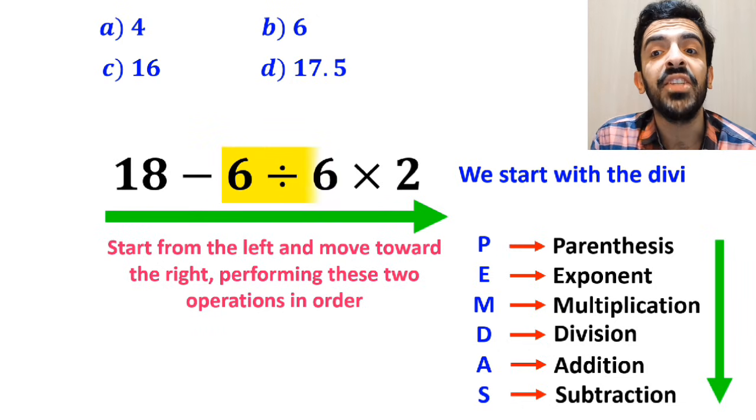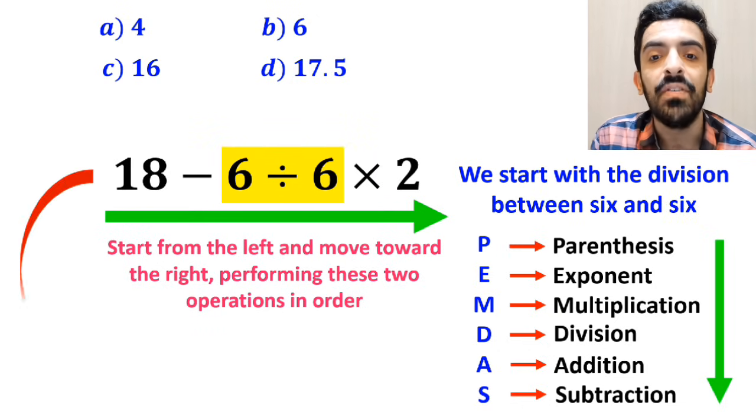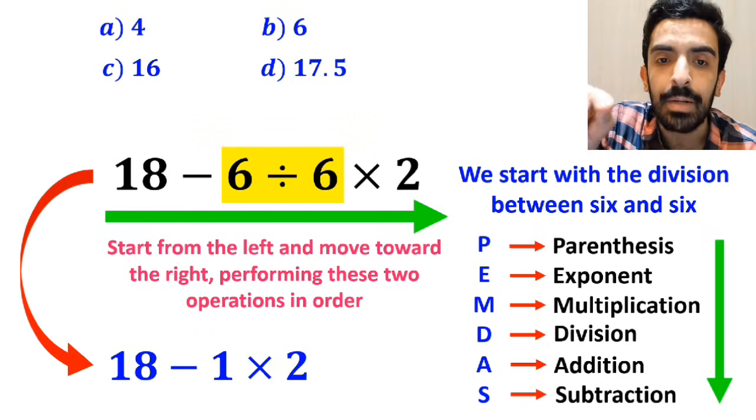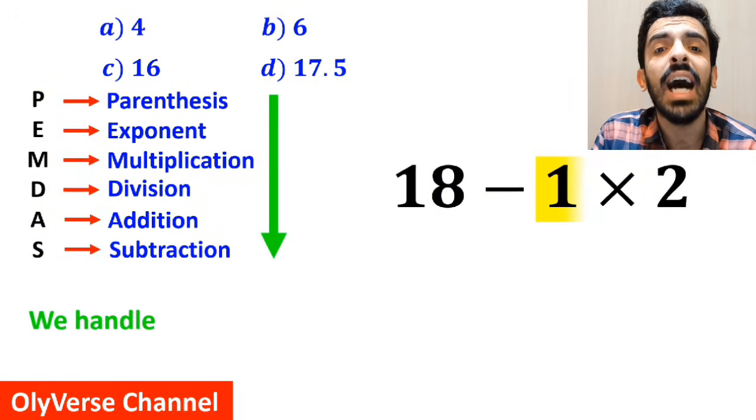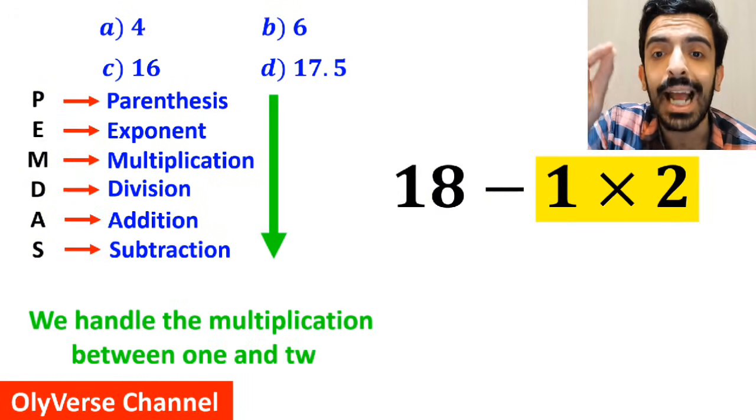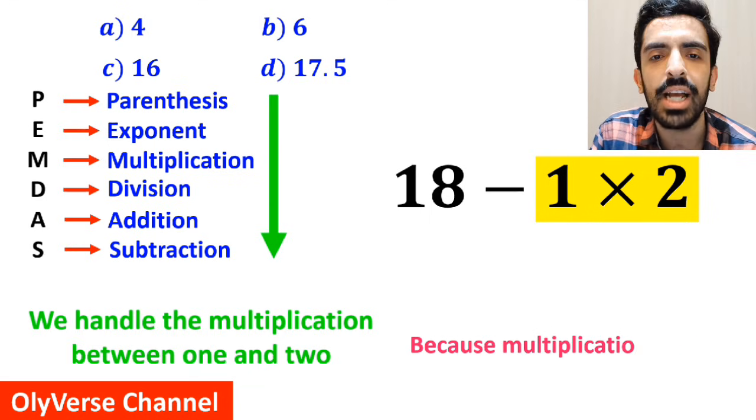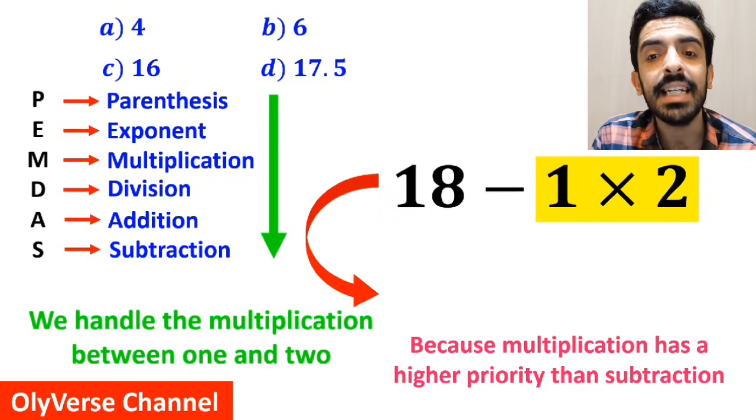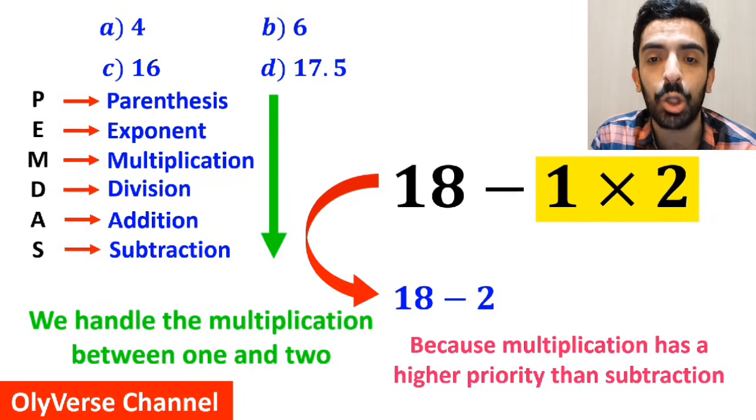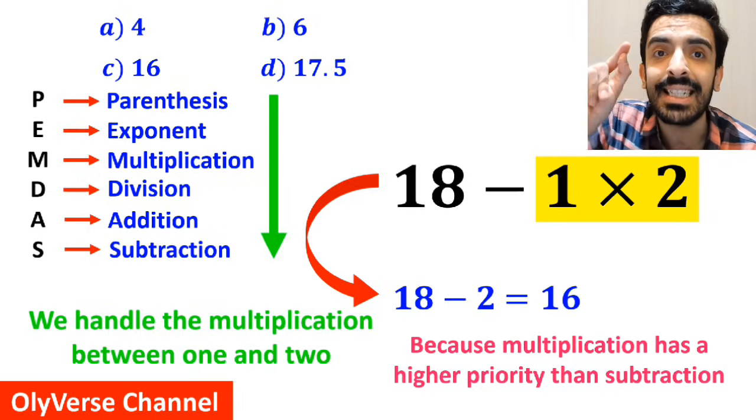So, first we substitute the division between 6 and 6, which simplifies this expression to 18 minus 1 multiplied by 2. And the final step, we handle the multiplication between 1 and 2, because multiplication has a higher priority than subtraction. And this expression simplifies to 18 minus 2, which ultimately gives us the answer 16.